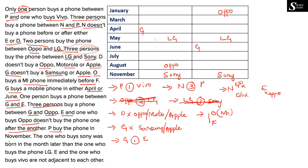P buys the mobile phone in the month of November, so P is fixed in November. Since there must be a gap of one person between P and Vivo, Vivo has to be placed one position before November. This allows us to confirm the Vivo placement in both possible arrangements.